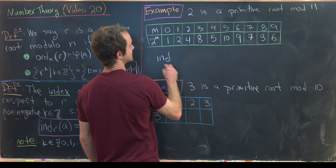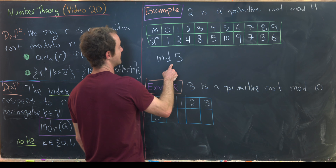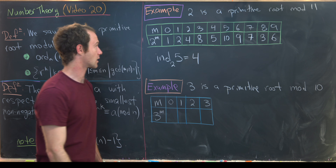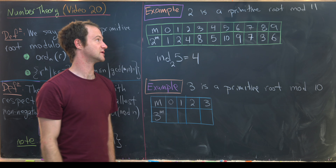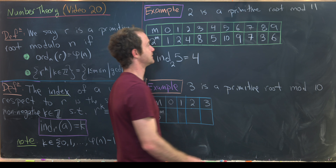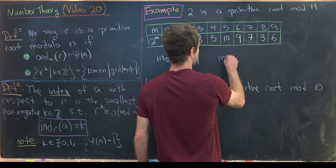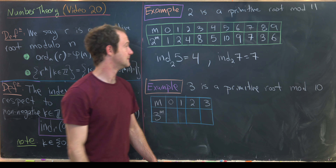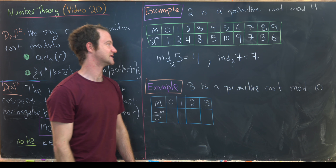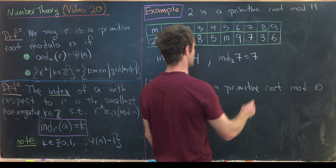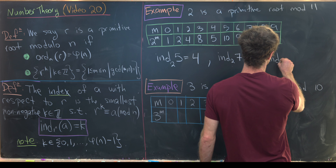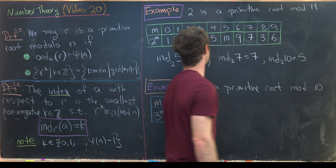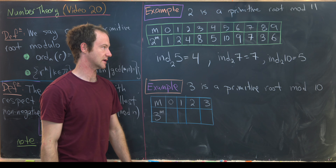This chart gives us index facts. The index of 5 with respect to 2 is 4, because 2^4 ≡ 5 mod 11. The index of 7 with respect to 2 is 7, because 2^7 ≡ 7 mod 11. The index of 10 with respect to 2 is 5, because 2^5 ≡ 10 mod 11.